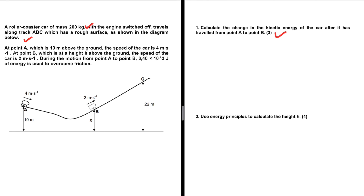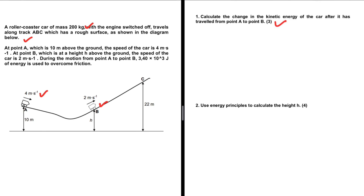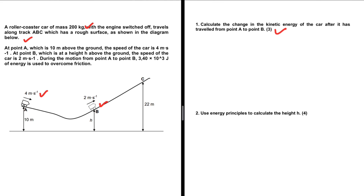At point A, which is 10 meters above the ground, the speed of the car is 4 meters per second. At point B, which is at a height h above the ground, the car has a speed of 2 meters per second. During the motion from point A to point B, 3.4 × 10³ joules of energy is used to overcome friction.